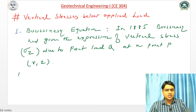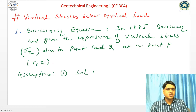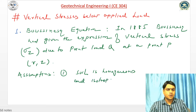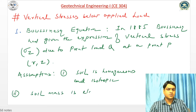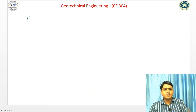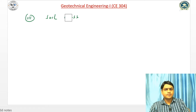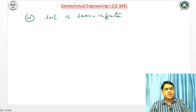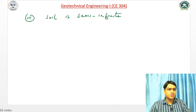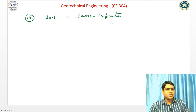Before that I will discuss the assumptions. The first assumption is that soil is homogeneous and isotropic. The second assumption is that the soil mass is elastic. The third assumption is that the soil mass is semi-infinite. Semi-infinite means the depth is finite and the soil area is infinite — or we can say the depth is known but the area of the soil mass is unknown. That is why the assumption is taken as semi-infinite.